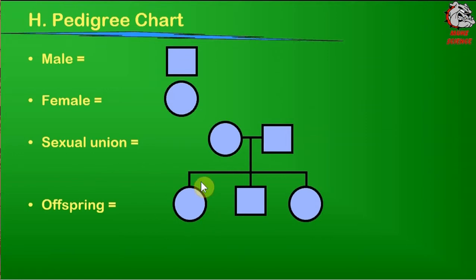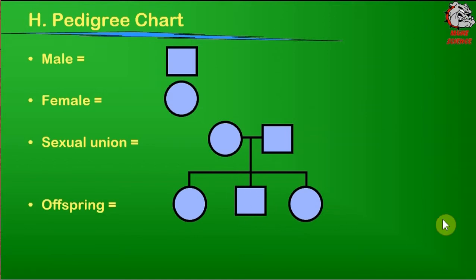In general, the offspring furthest to the left is our firstborn, the next one is secondborn, thirdborn, etc. There are probably some variations in that depending on how you want to put together those particular pedigrees.